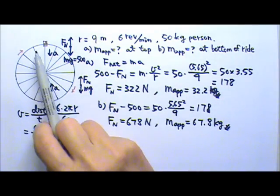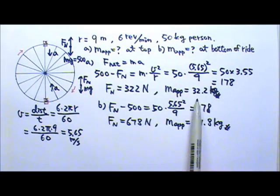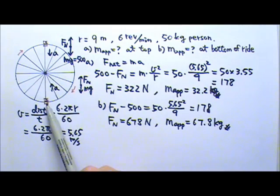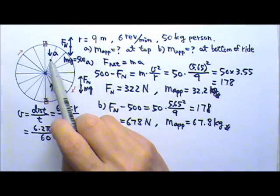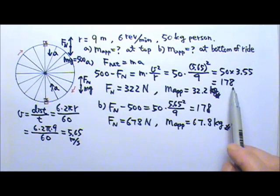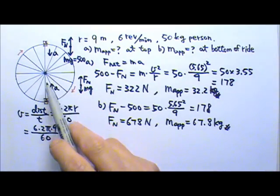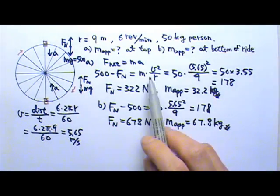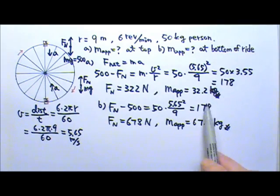So this person feels lighter up there and heavier down there. Does that match your experience? Because the acceleration is the same amount up there and down here, that means the ma is the same amount, 178.